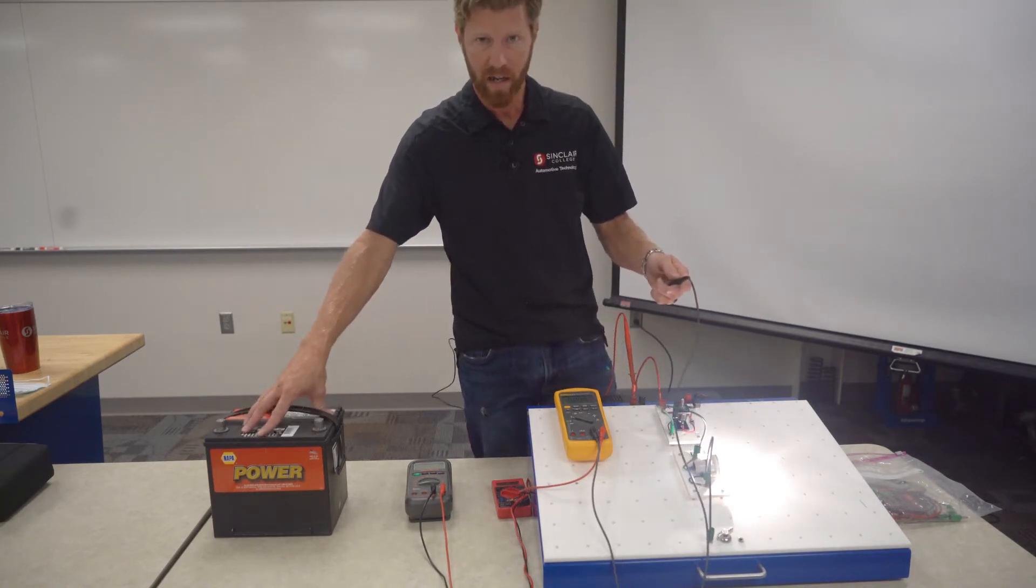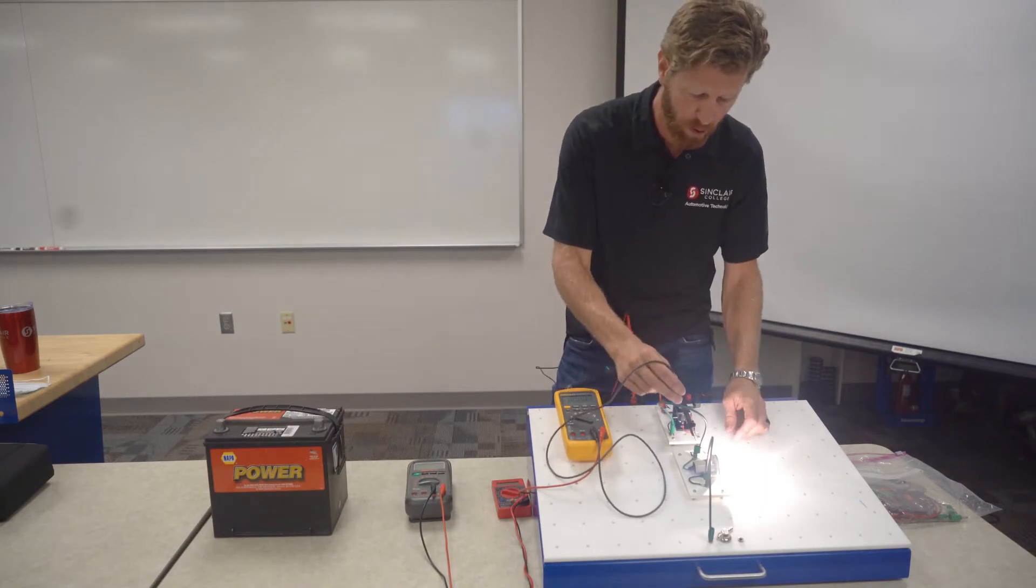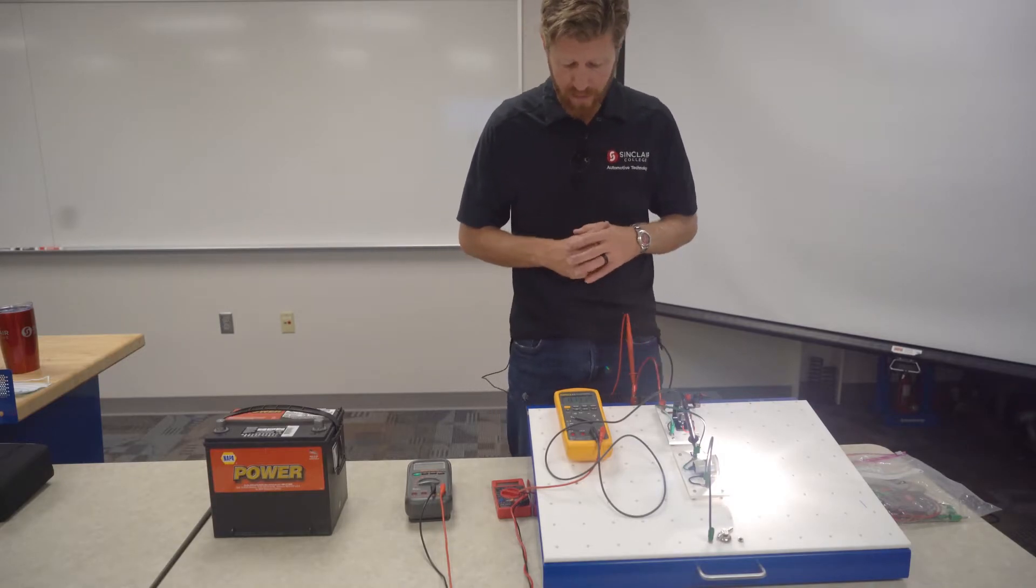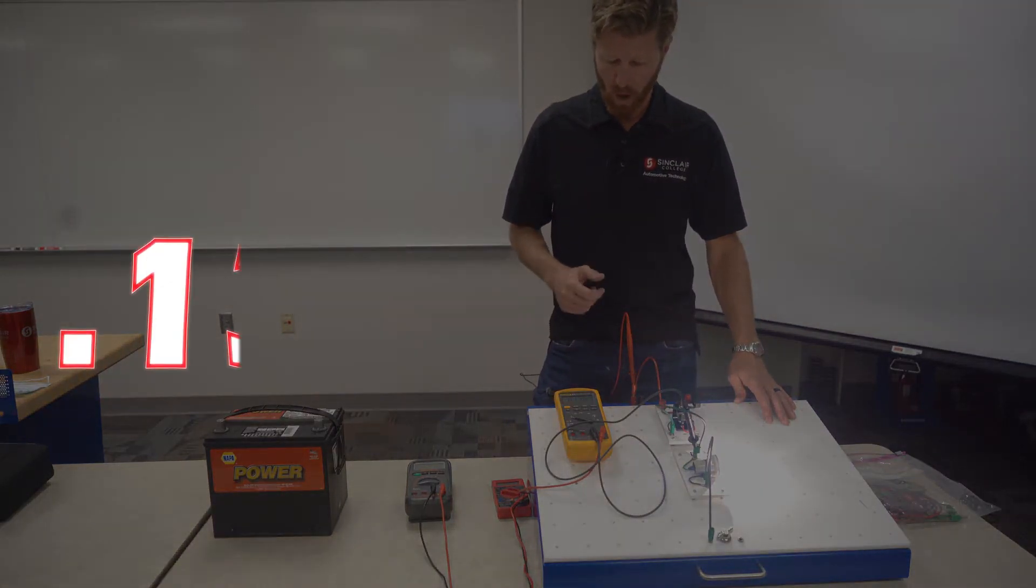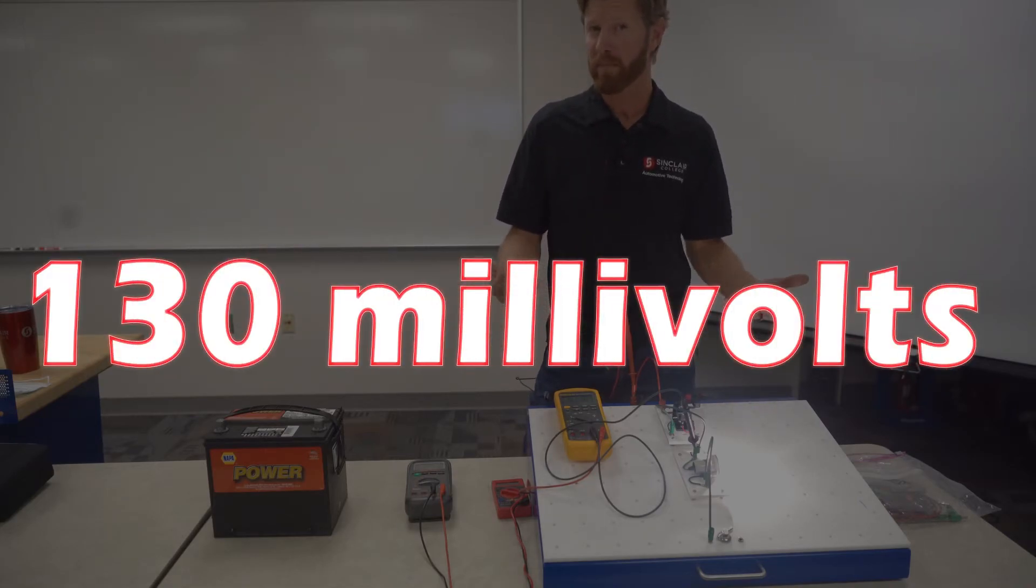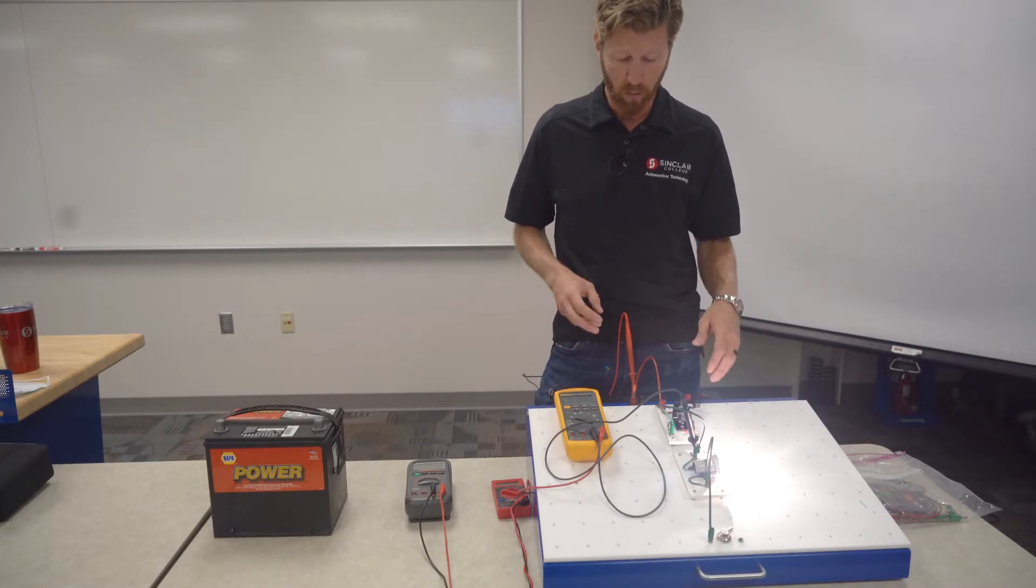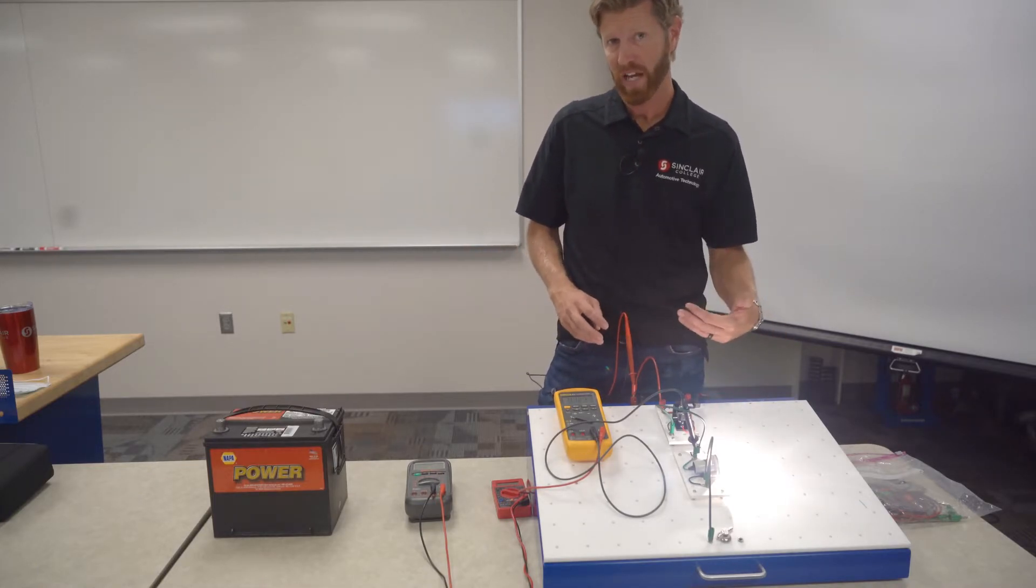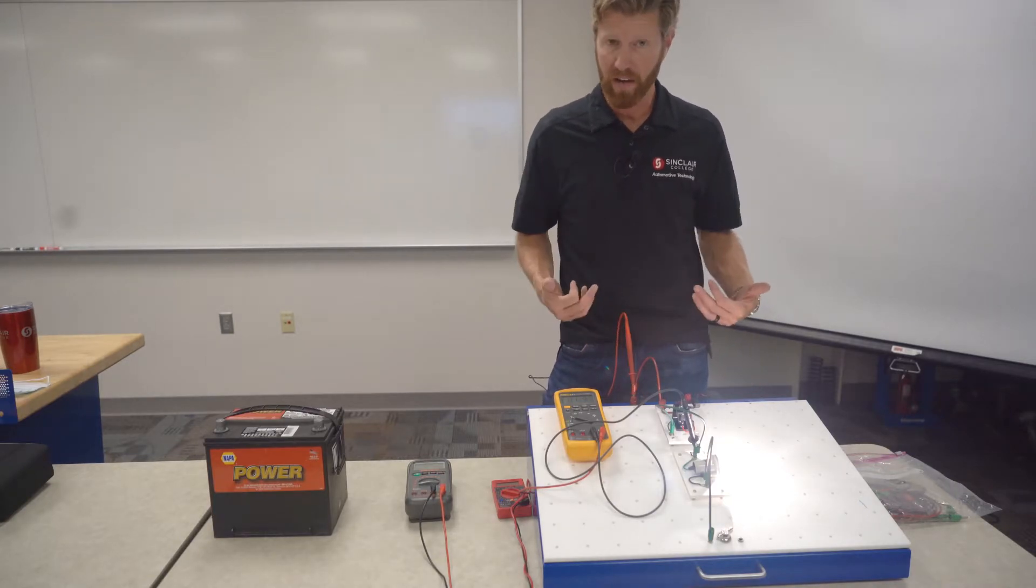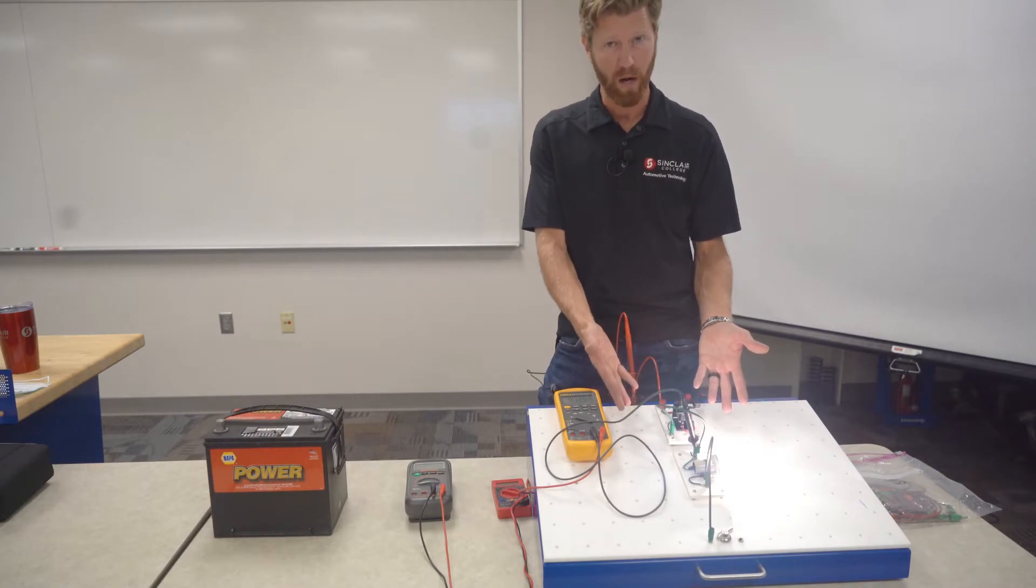So all the way at the beginning, positive side of the circuit, and then I'm going to take my black lead and I'm going to put it before the component I'm trying to test and take a look at that number. Now this one's measuring 0.130 volts, which means about 130 millivolts. Our spec is 200 millivolts, so we're well below the spec on the positive side or sometimes referred to as the feed side. So if this was in a live circuit and this component was dim, I do not have a problem here.